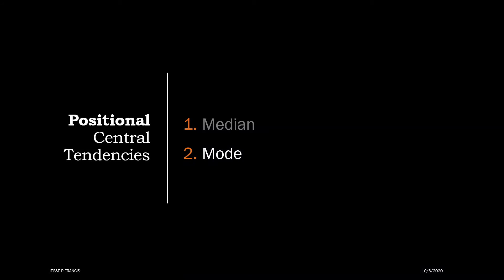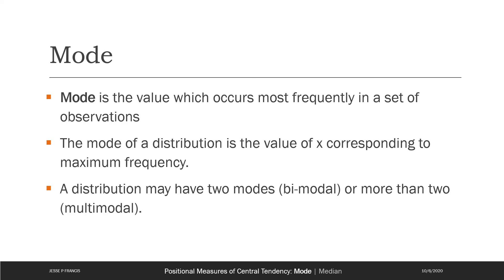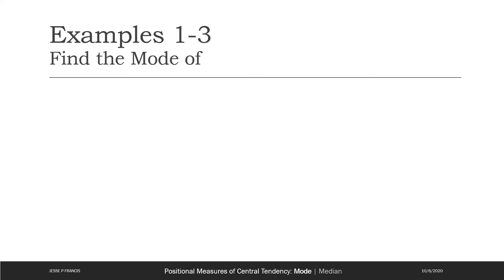Now let's look at the other positional central tendency — mode. Mode is pretty easy to spot because it's the number which is most frequent in the entire distribution. In terms of a frequency distribution, it's the number with the highest frequency — you can note it with a glance. However, a distribution may have two values of x with the highest frequency. In that case you will have two modes; such distributions are called bimodal. If there are more than two, they are called multimodal. So mode is not too well-defined — a distribution may have one, two, three, or more modes.